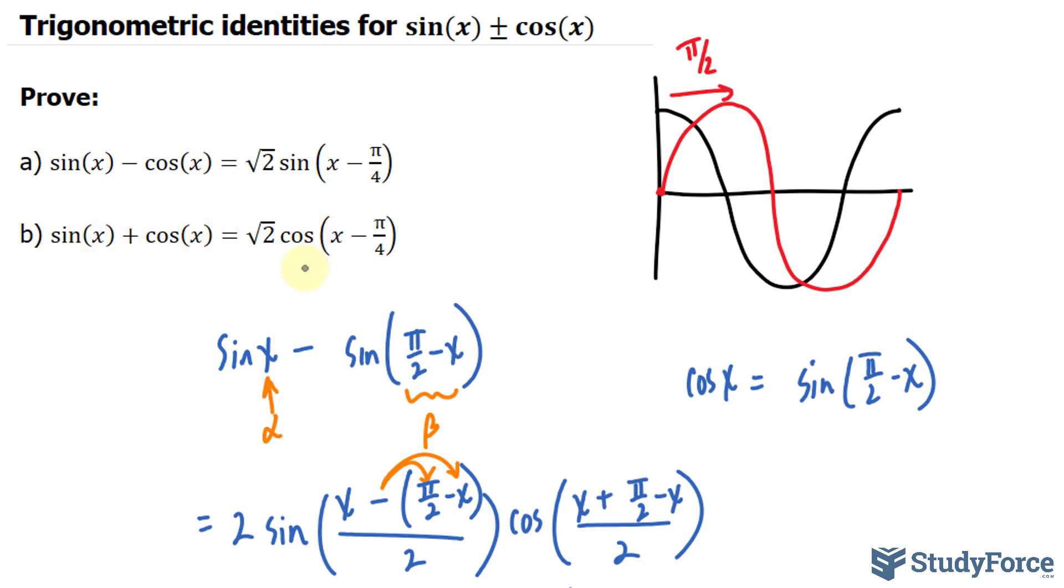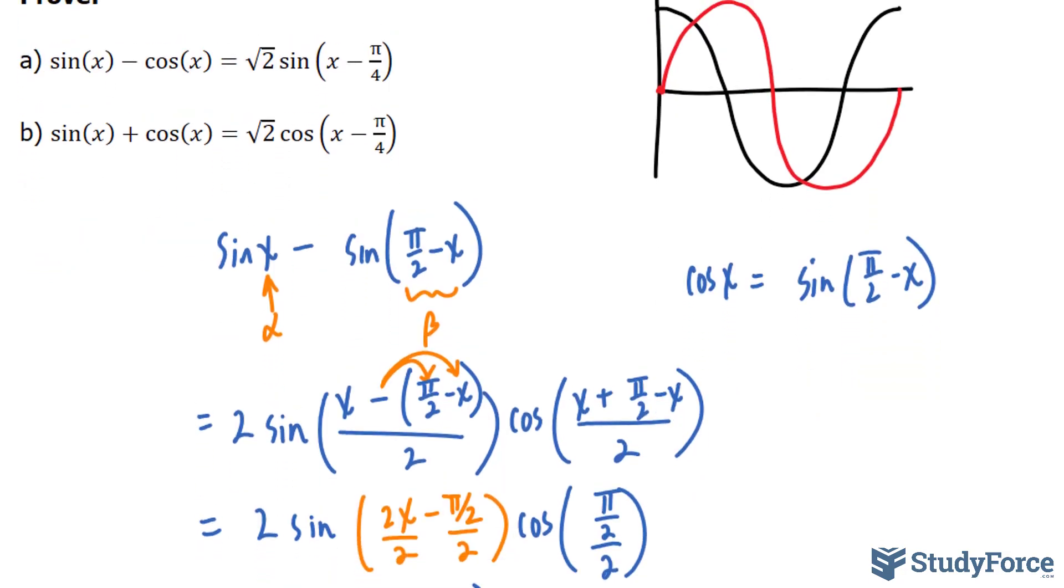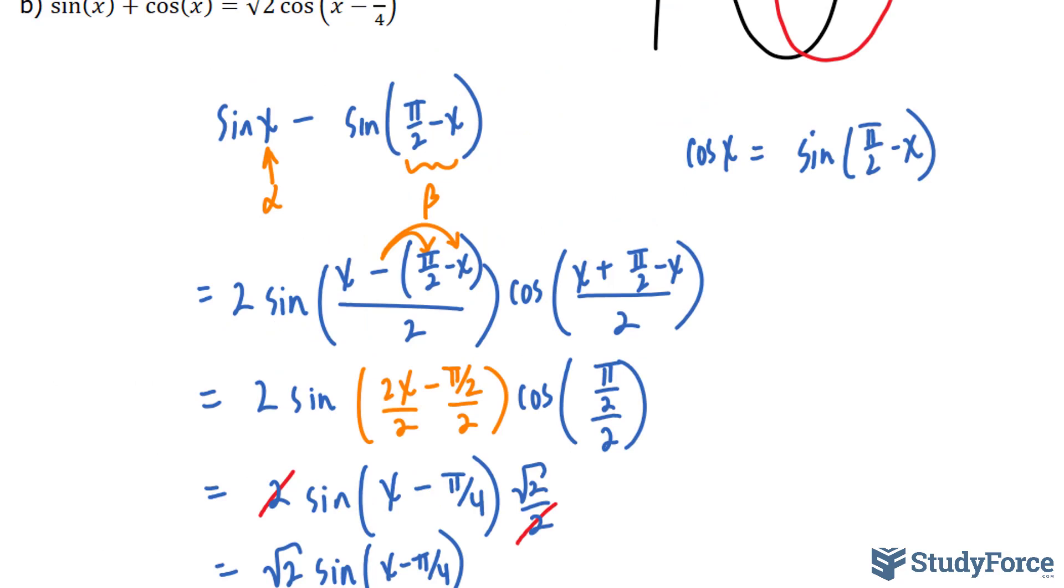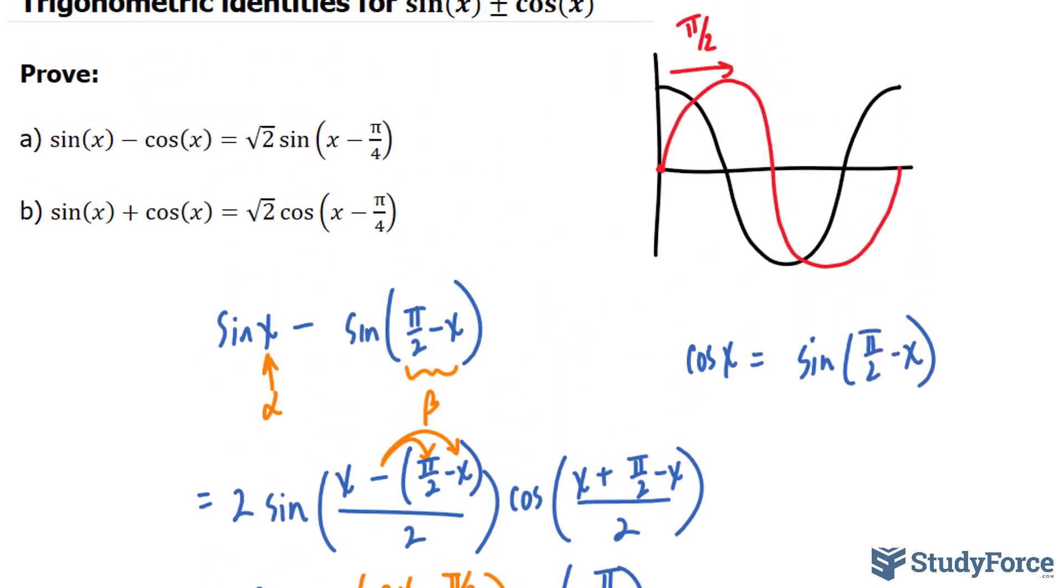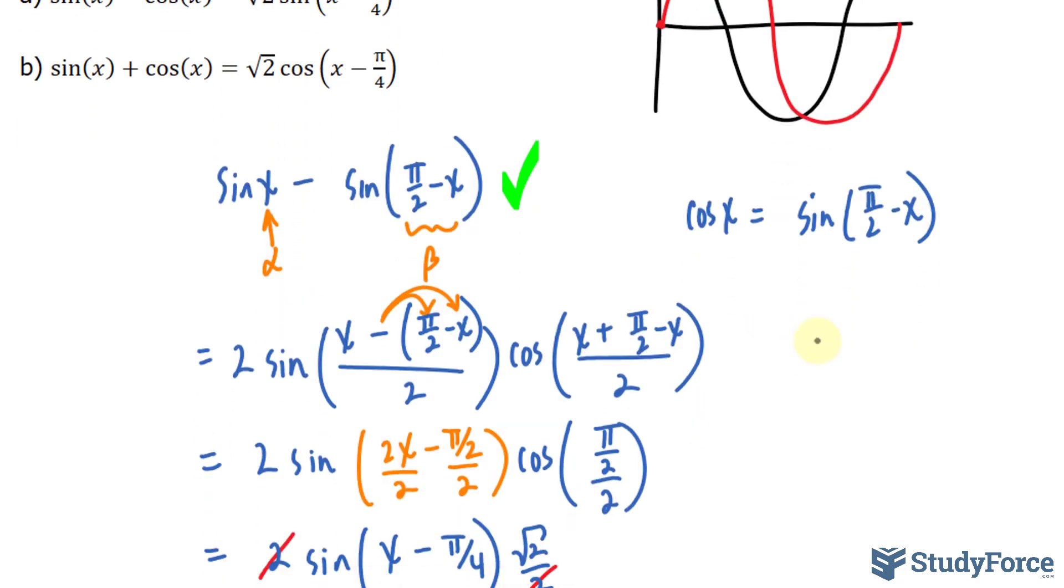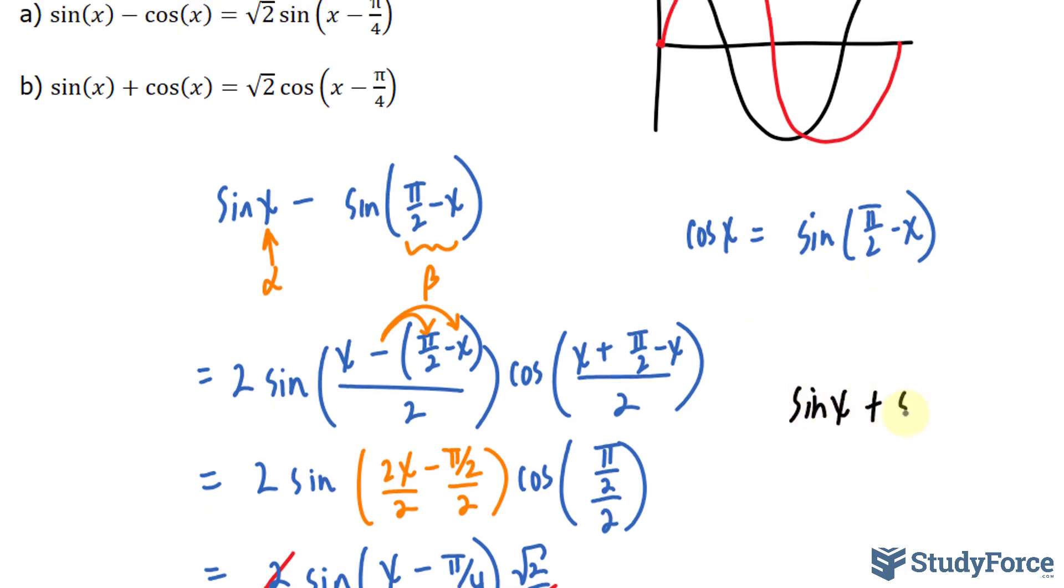The proof to the second one is actually very similar to that of the first one. In fact, the only thing that changes is how you apply the sum-to-product formula. For example, this part remains the same, except for the fact that this should be plus. So, let me just write that down for reference, and you can do the rest. We should end up with sin(x) + sin(π/2 - x).